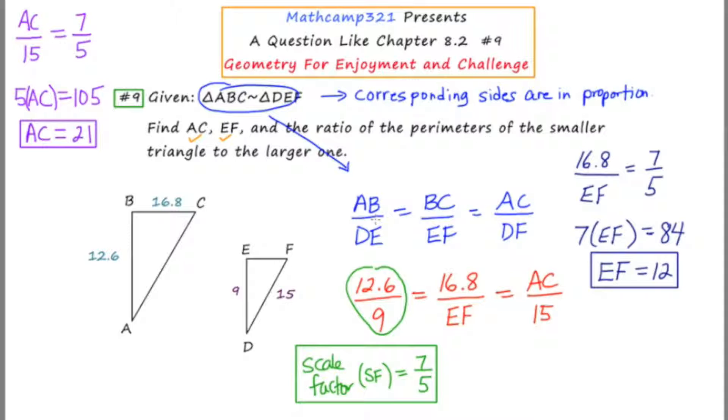Now the scale factor the way that we have it written is 7 to 5. We're making a comparison with large to small. But they specifically want the ratio of the perimeter of the smaller to the larger. So what we're going to have to do is reverse that and say that the ratio of the perimeters, if we're talking smaller to larger, is 5 to 7.